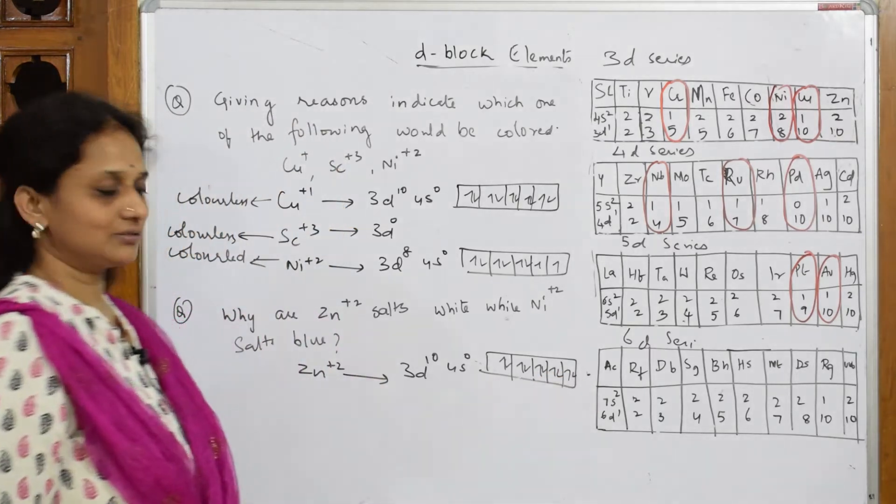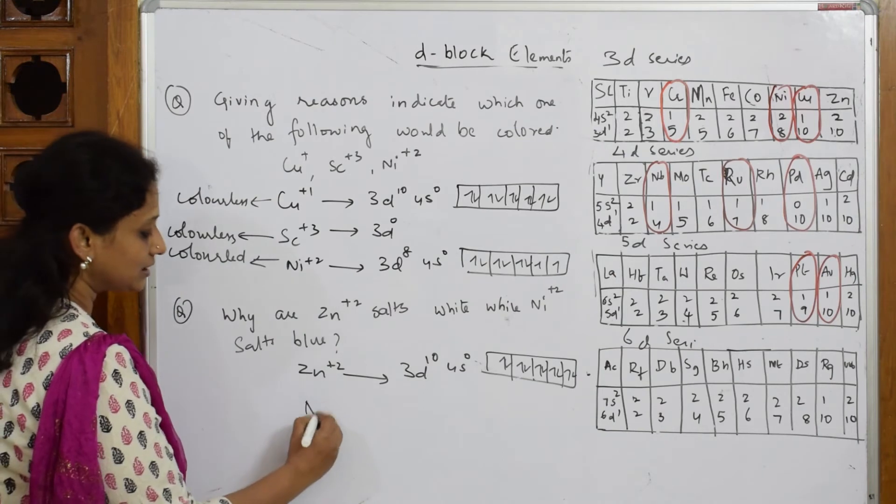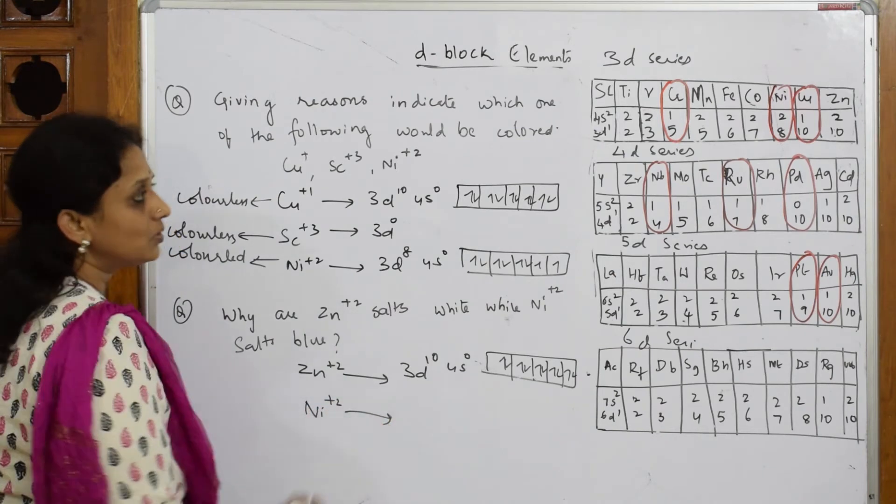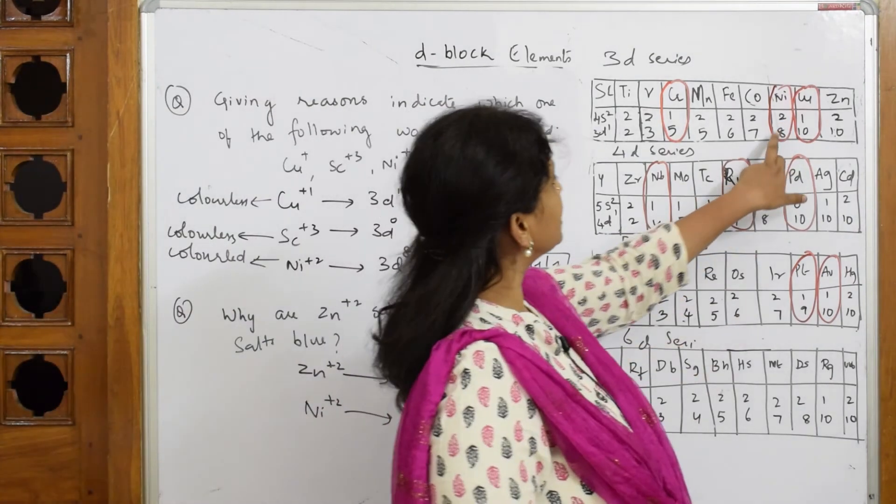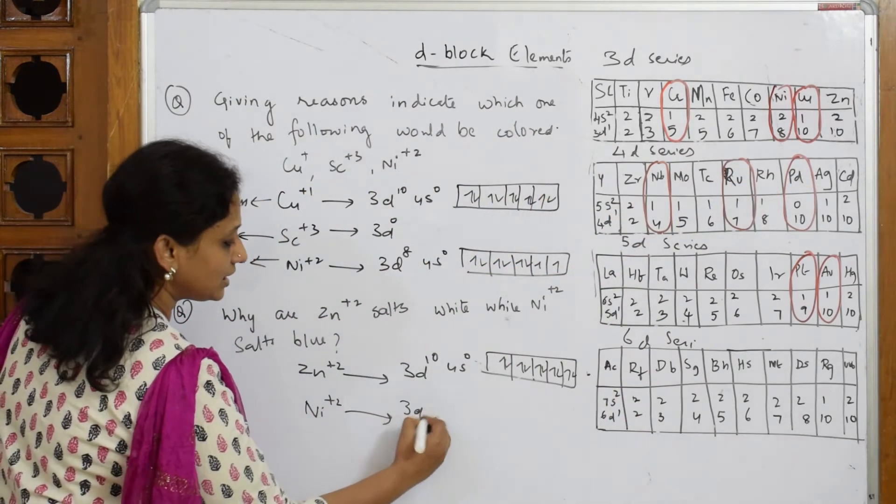Now I have to write for nickel. Nickel is +2. What is nickel configuration? Nickel configuration is 3d8 4s2. So write down 3d8 4s2.